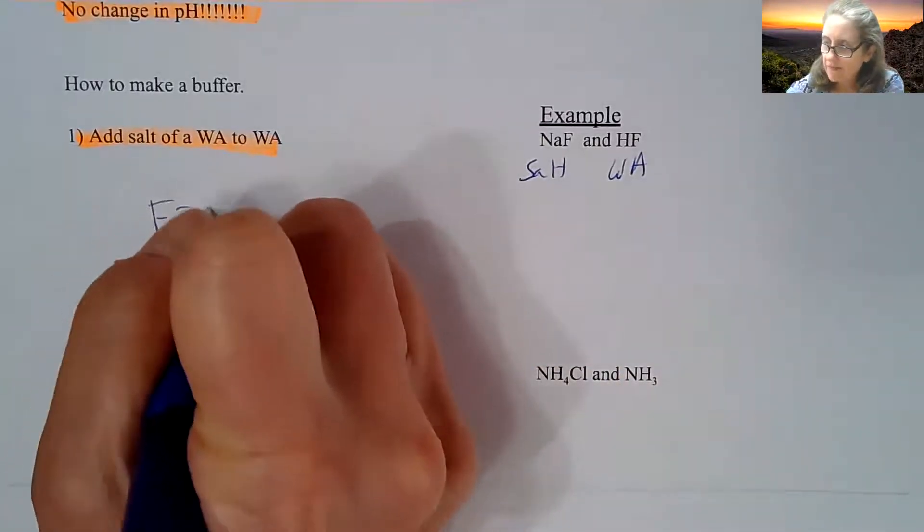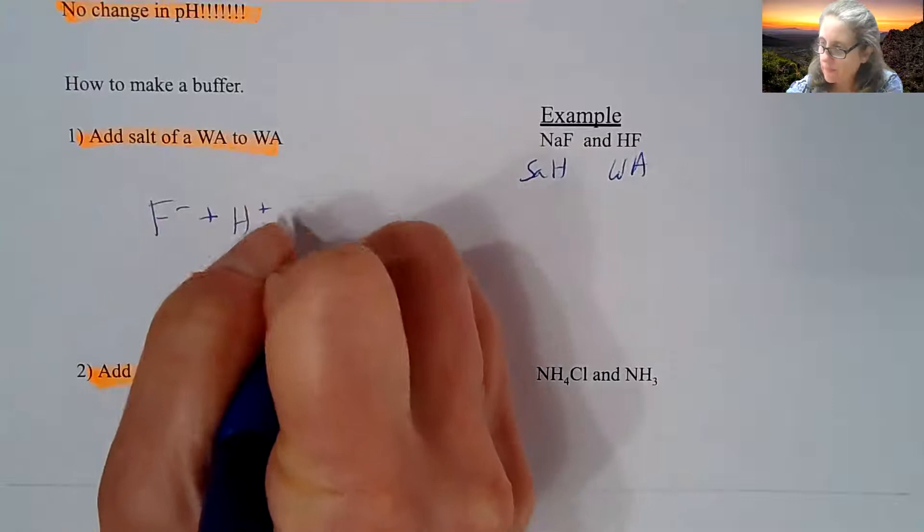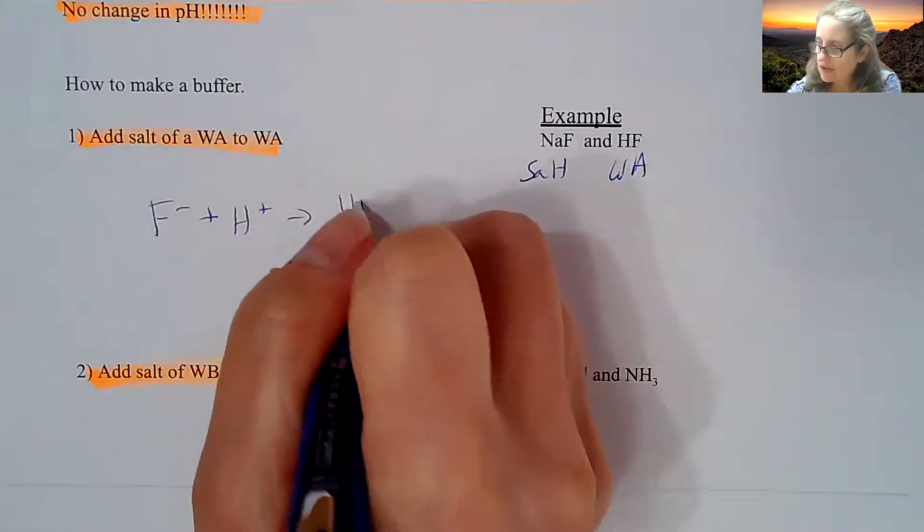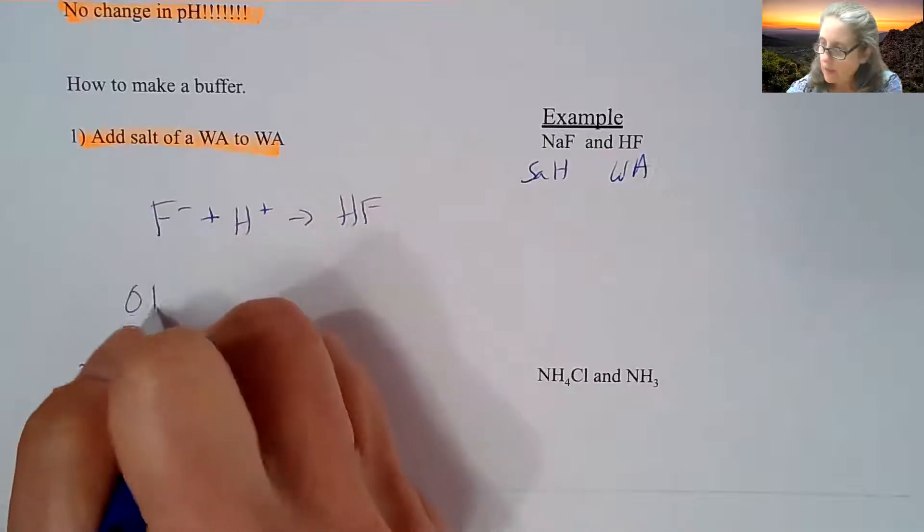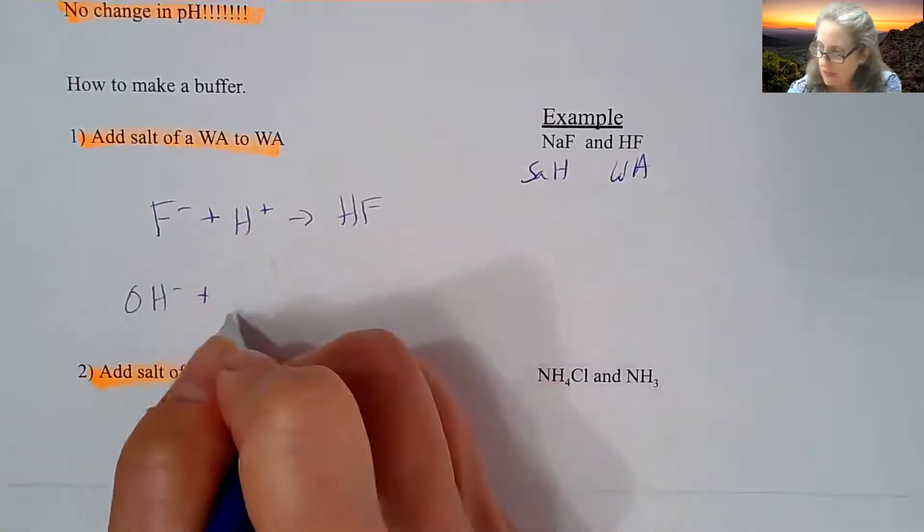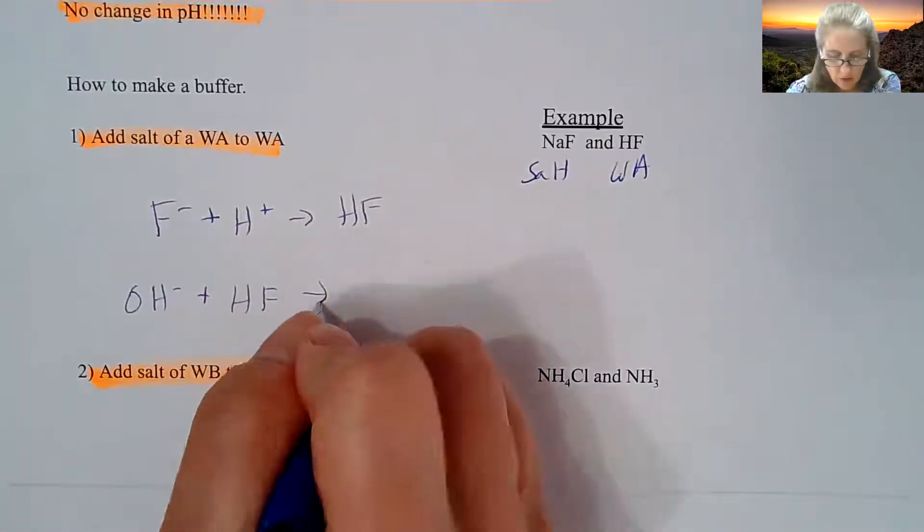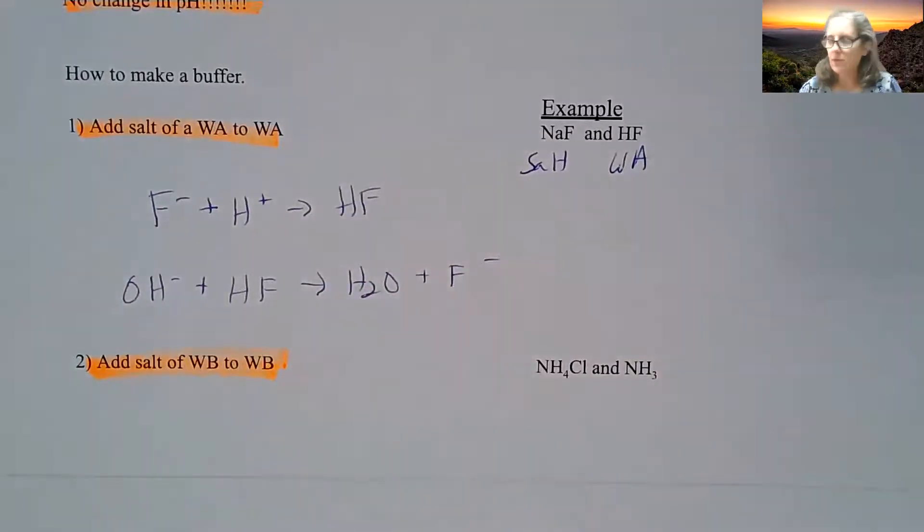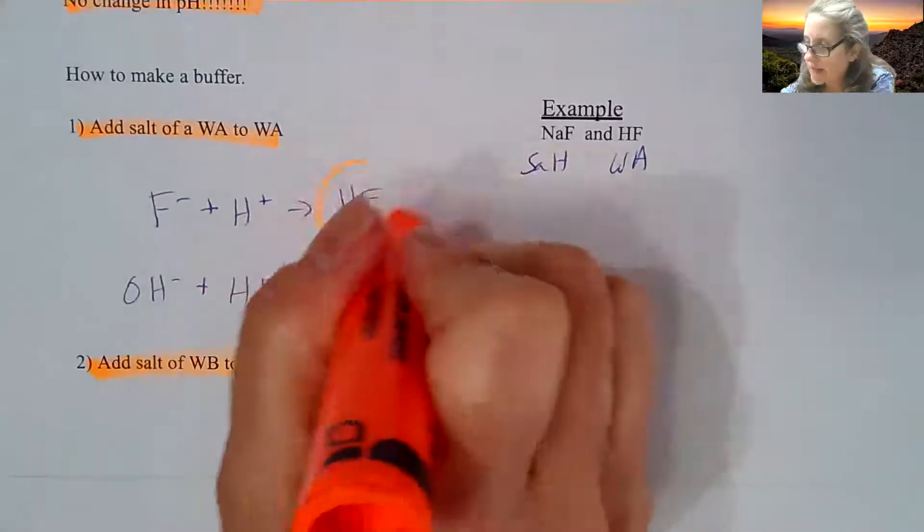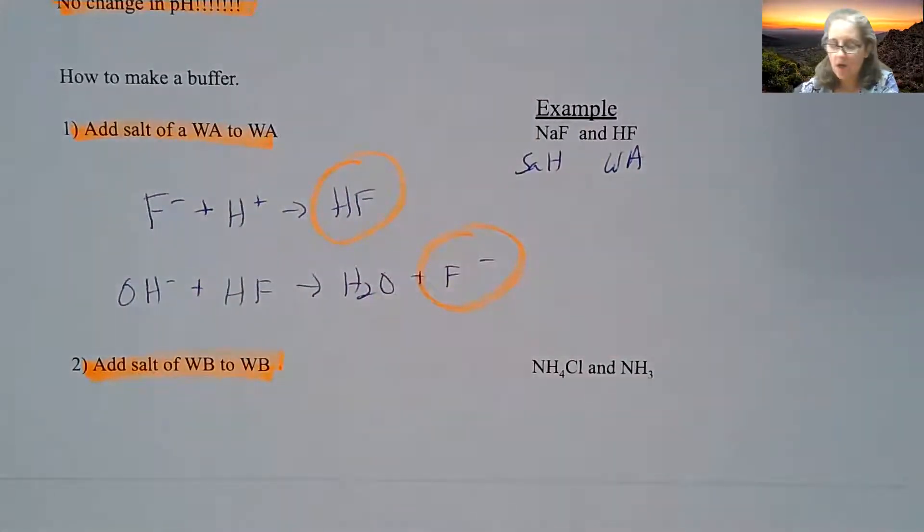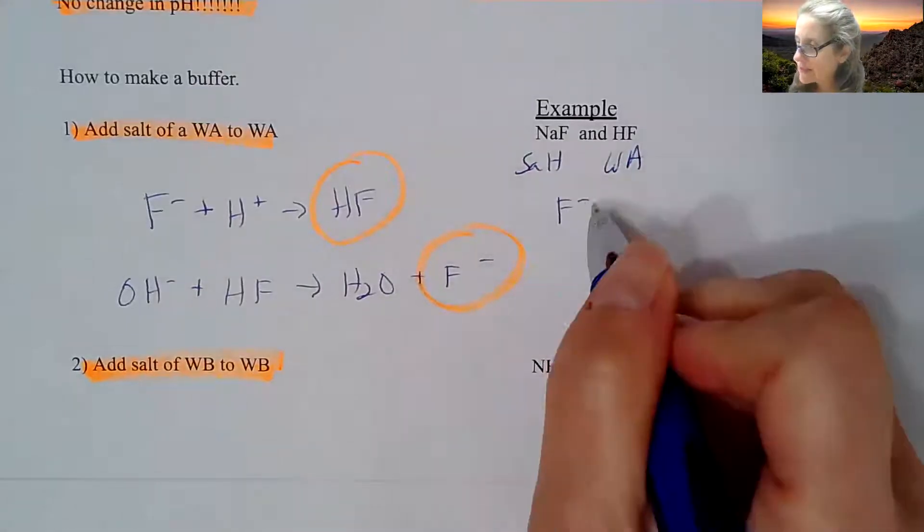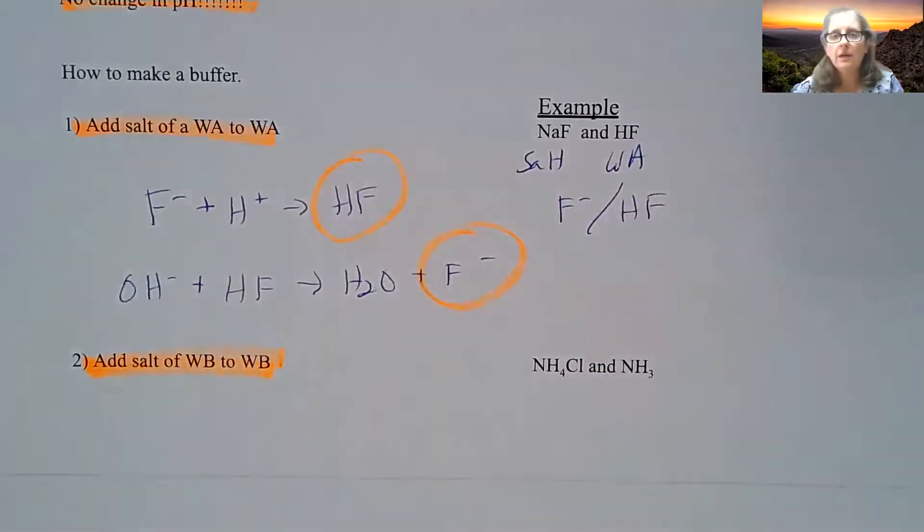This is a salt of the weak acid and this is a weak acid. So what you create is F- can react with any acid that you add to it to make HF. And OH, if it's coming in, is going to react with the HF to produce water and more of the anion. Again, focusing on the fact that HF and F- are in your original buffer.